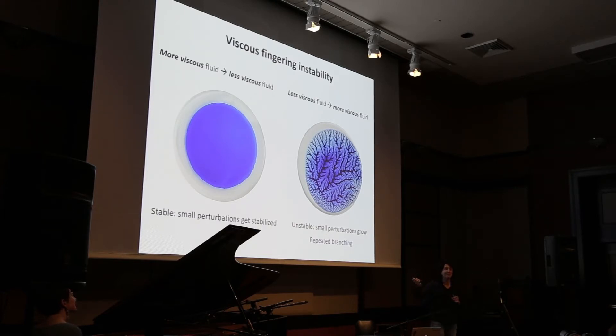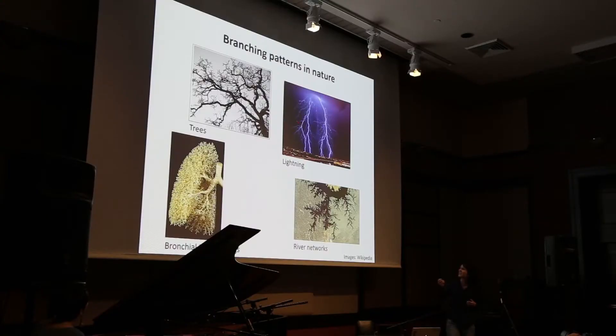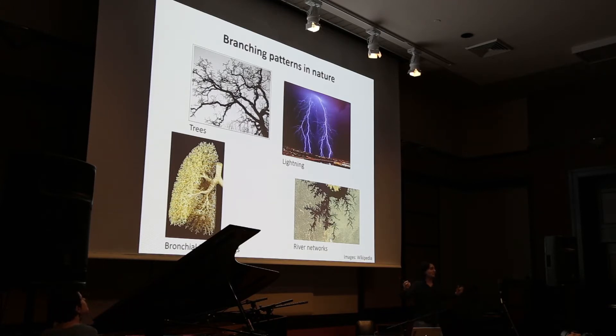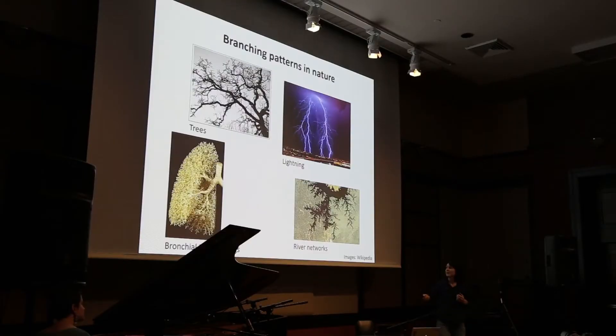I overheard a couple of you talk about the tickets and say that these patterns look just like trees or like a river network. Indeed, such branching patterns are everywhere in nature. Nature actually exploits patterns like this in order to get an optimized function. For example, a tree grows with all these branchings because it leads to optimized light exposure of the tree leaves and optimized oxygen exposure for the tree.